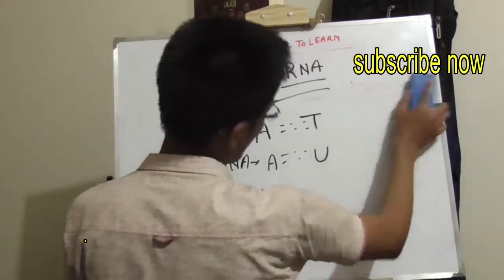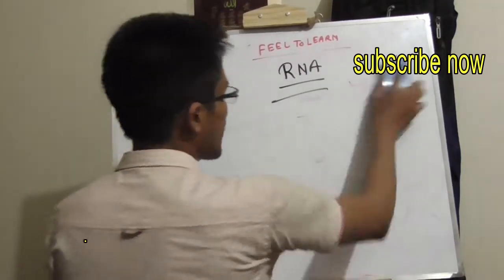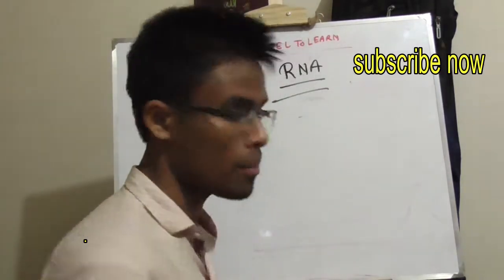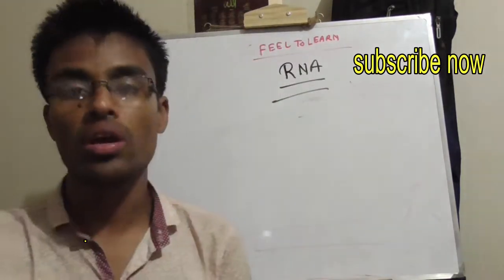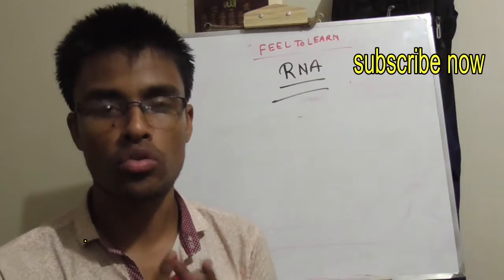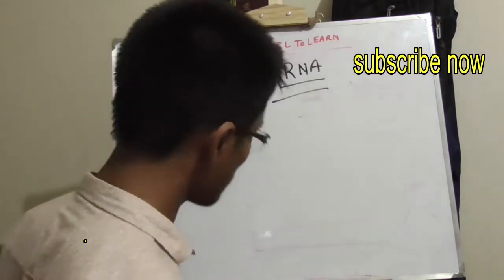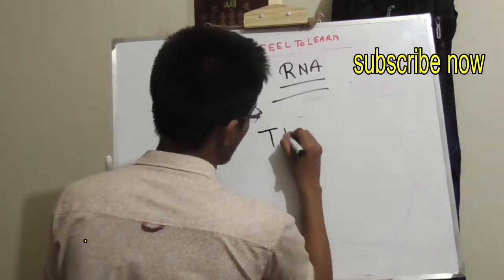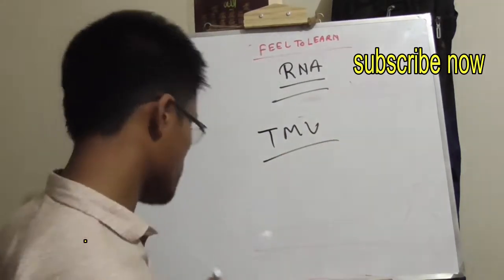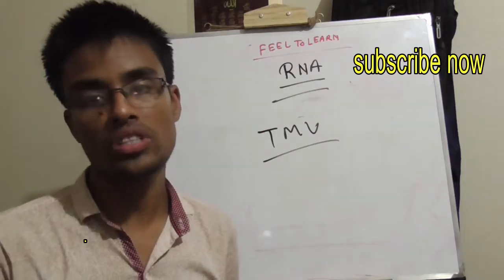So here is RNA. So we can do RNA. So actually RNA is a virus. There is a form of RNA. So this is TMV. TMV.